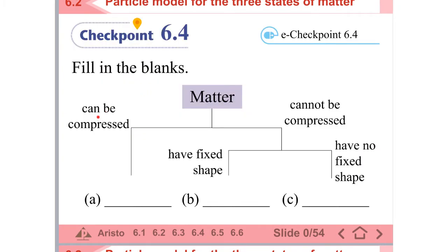If something can be compressed, that can only be gas. If something has a fixed shape but cannot be compressed, then it will be solid. And the last one — if it cannot be compressed but has no fixed shape, this will be liquid.